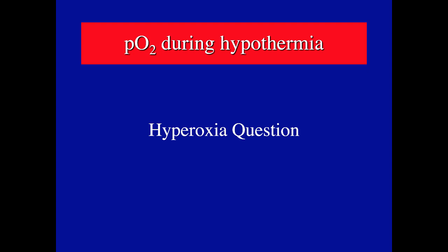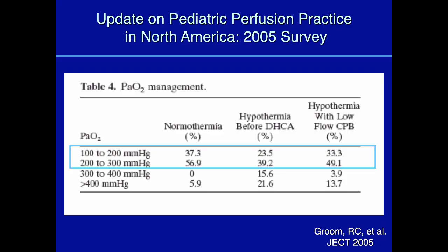At cold temperatures, the oxyhemoglobin dissociation curve is shifted so far to the left that oxygen is bound very tightly to hemoglobin and is not readily available to tissue. Survey data shows most practitioners maintain PO2s between 100 and 300, accounting for roughly 84% of cases, though another group at very low temperatures uses very high PO2s — consistent with the hyperoxia approach.